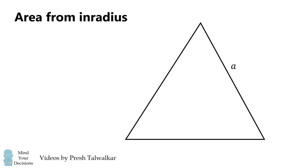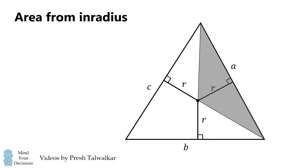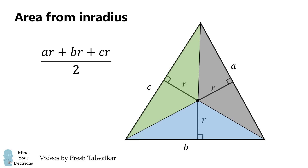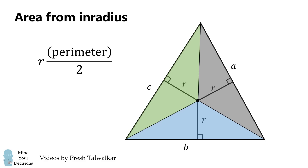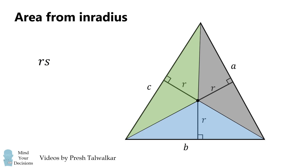Now let's derive the area of a triangle from its in-radius. In a triangle with sides A, B, C, consider the inscribed circle. Draw radii to each of the points of tangency — this partitions the triangle into three smaller triangles. One triangle alongside side A has area AR/2, the one alongside B has area BR/2, and alongside C has area CR/2. Simplifying and factoring out R gives R multiplied by the perimeter over 2. The perimeter over 2 is the semi-perimeter S, so the formula is Area = R times S.